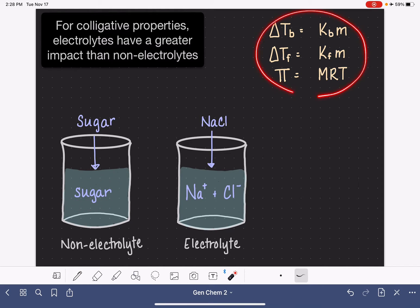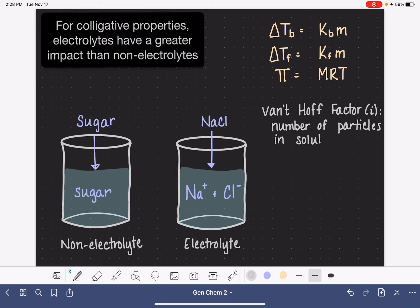The way that we can take this into consideration when we're calculating boiling point or freezing point changes or osmotic pressure is by using another variable that we call the van't Hoff factor. The van't Hoff factor, which is symbolized with a lowercase i, is just the number of particles that are present in the solution after a molecule dissolves.